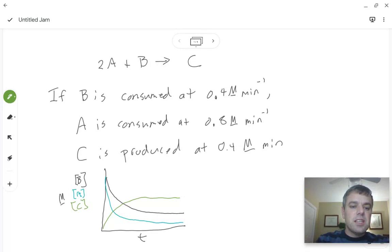So the B and C, they kind of look like inverses of each other because B is being consumed, C is being produced at the exact same rates. And then A, at any point along this line, its slope should be twice as that of B.